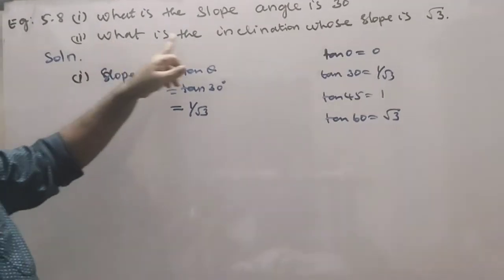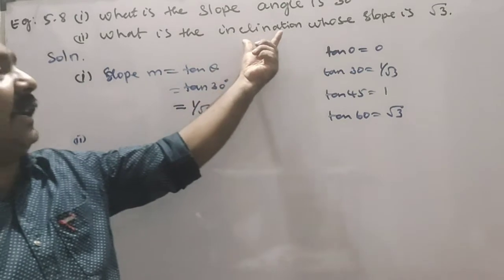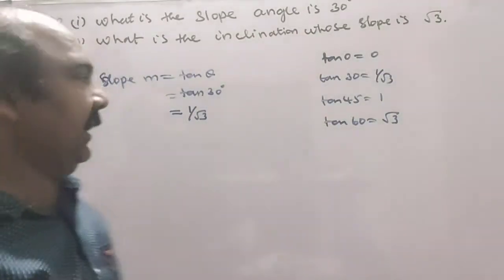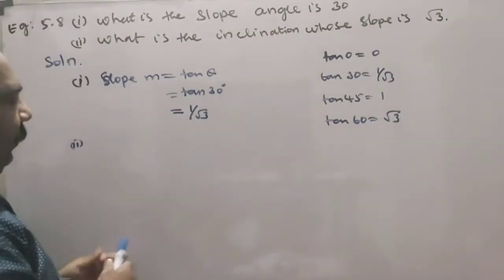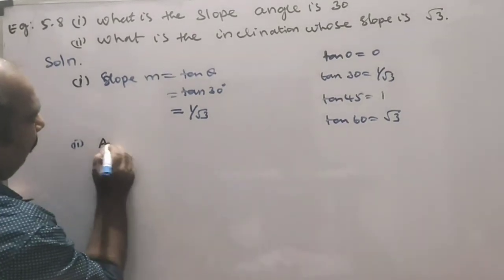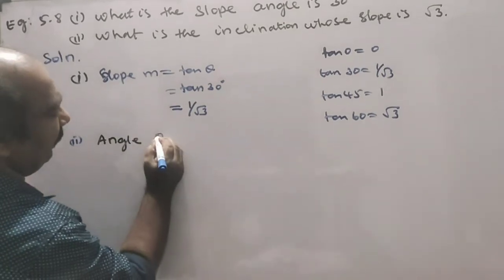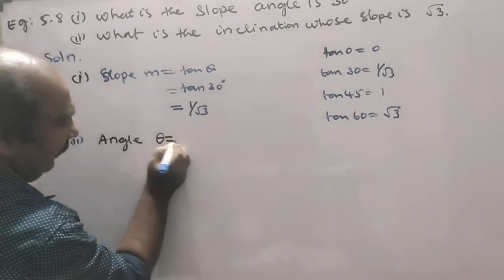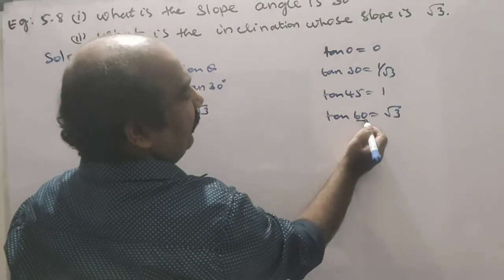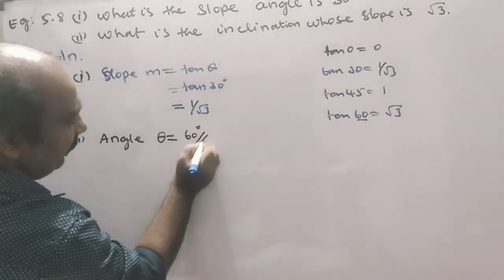What is the angle of inclination? The angle is 30 degrees. What is the slope? Angle theta is equal to 60 degrees.